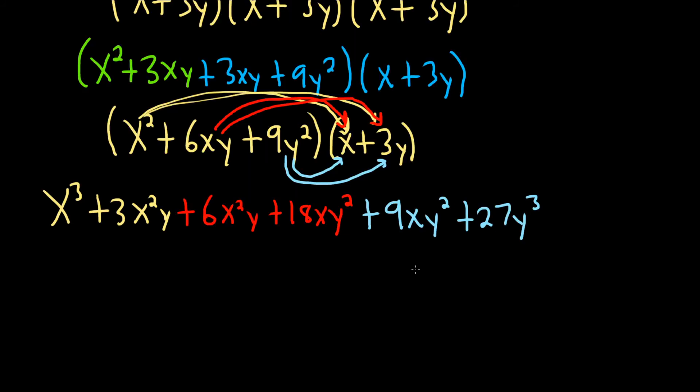Wow, what a mess. So let's see what we end up with. As I write stuff down, I will cross it out so I don't mess up. So x cubed. Boom, we took care of that. Are there any like terms? Looks like 3x squared y and 6x squared y can be combined to 9x squared y.